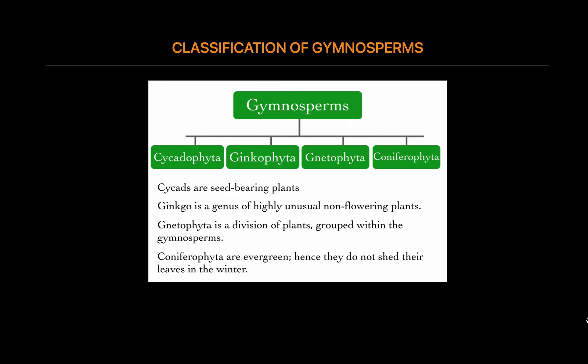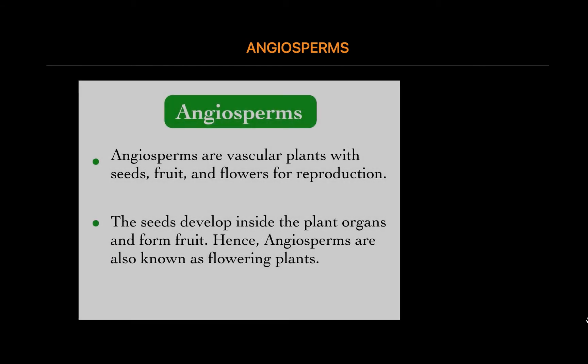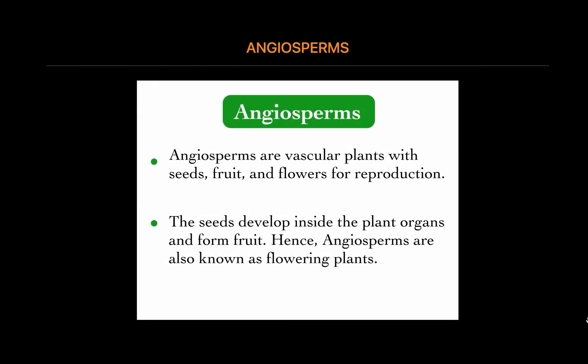This is about gymnosperms. Now let's study about the fifth subdivision of Kingdom Plantae, that is Angiosperms. Angiosperms are vascular plants with stems, roots, and leaves. The seeds of the angiosperm are found in a flower. The seeds develop inside the plant organs and form fruit. Hence, they are also known as flowering plants.